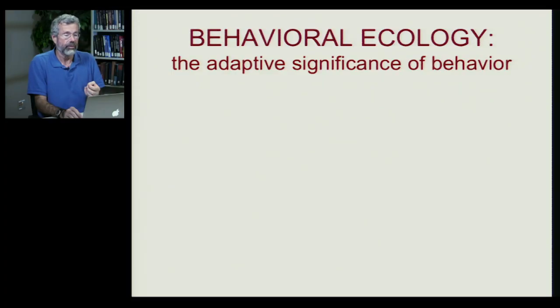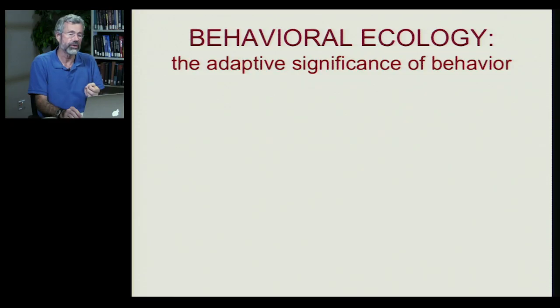Today we're going to look at some very complex forms of human behavior. But first we want to get into the evolutionary background of behavior. We want to look at a field called behavioral ecology, which is concerned with the adaptive significance, or the evolutionary advantage, of certain forms of behavior.